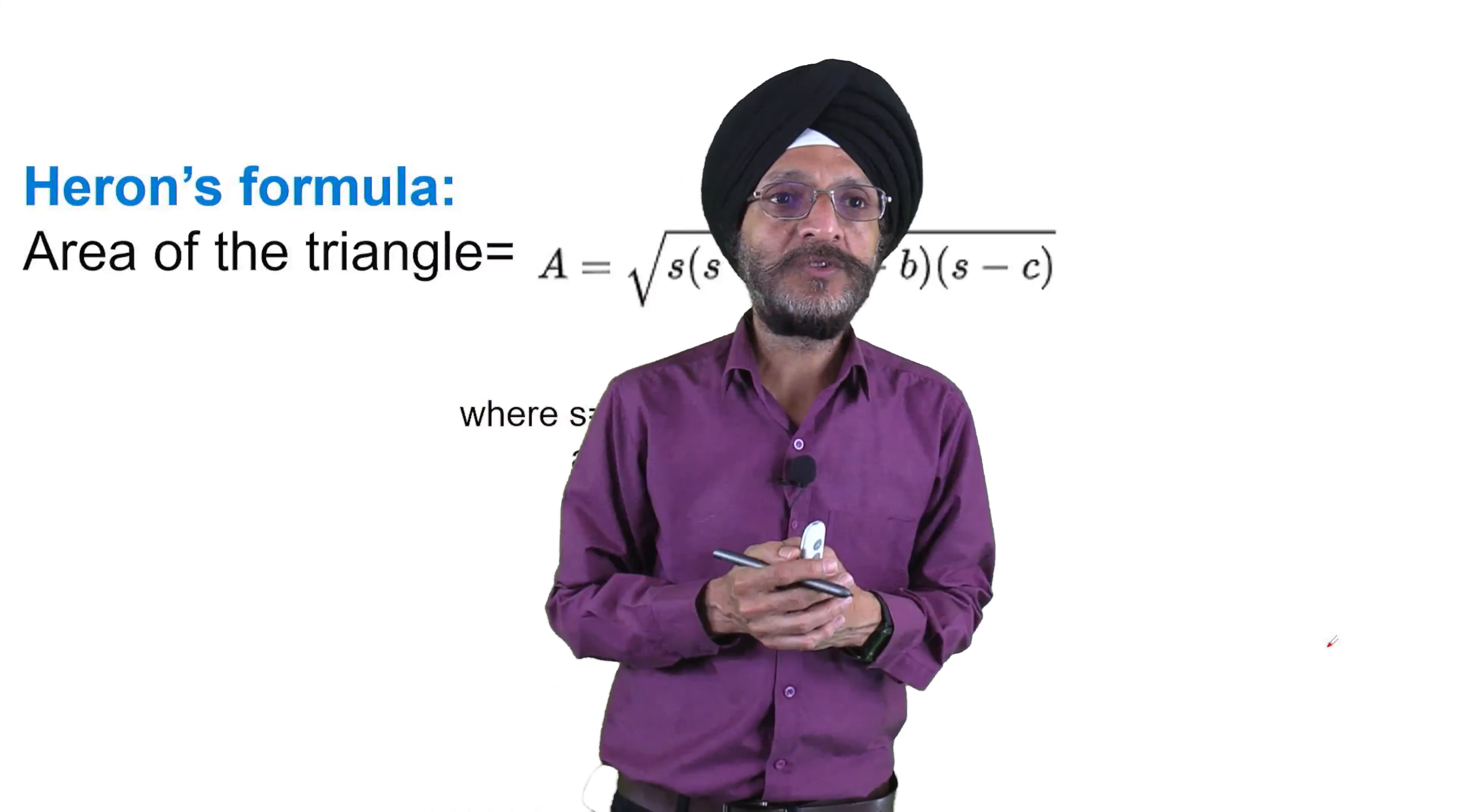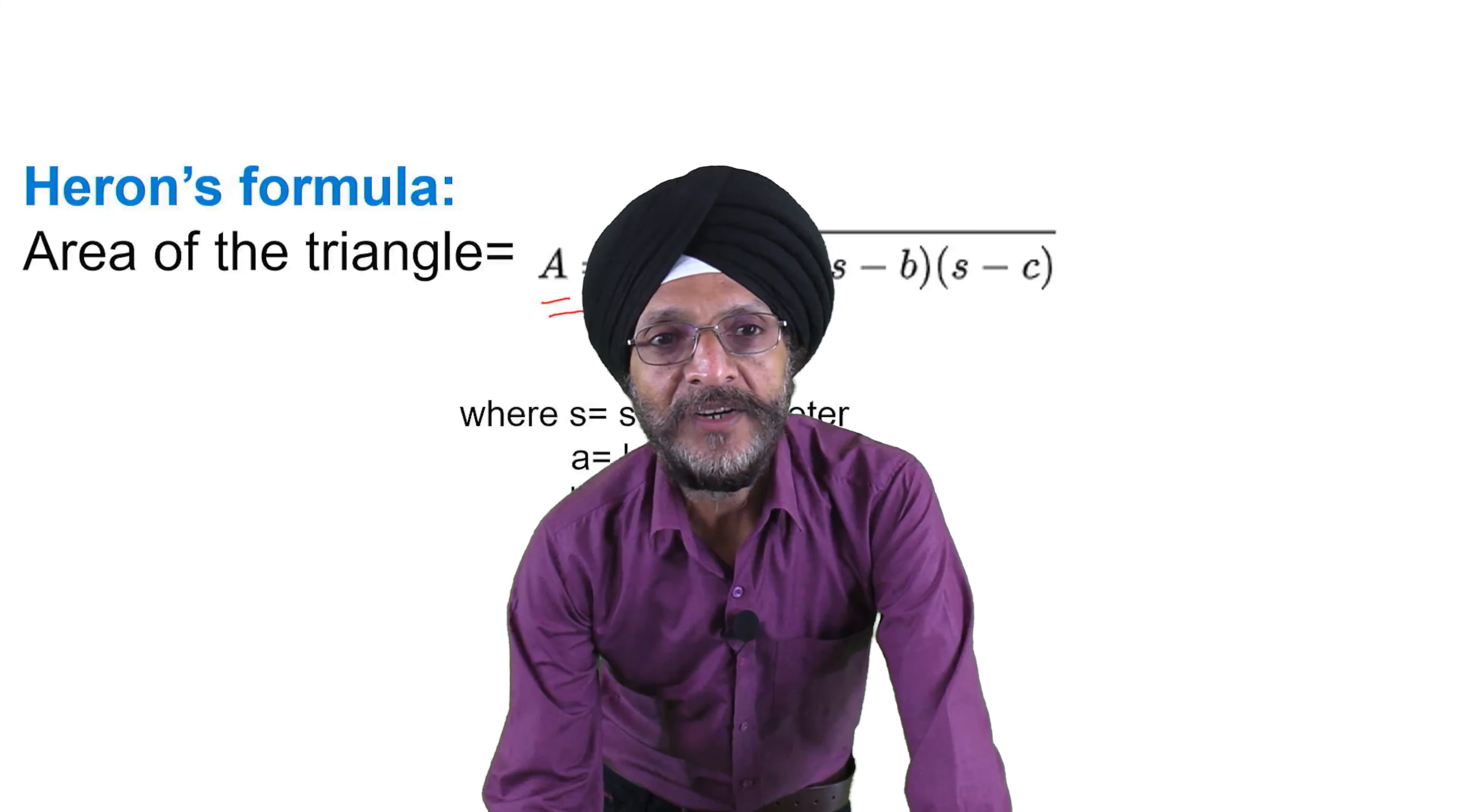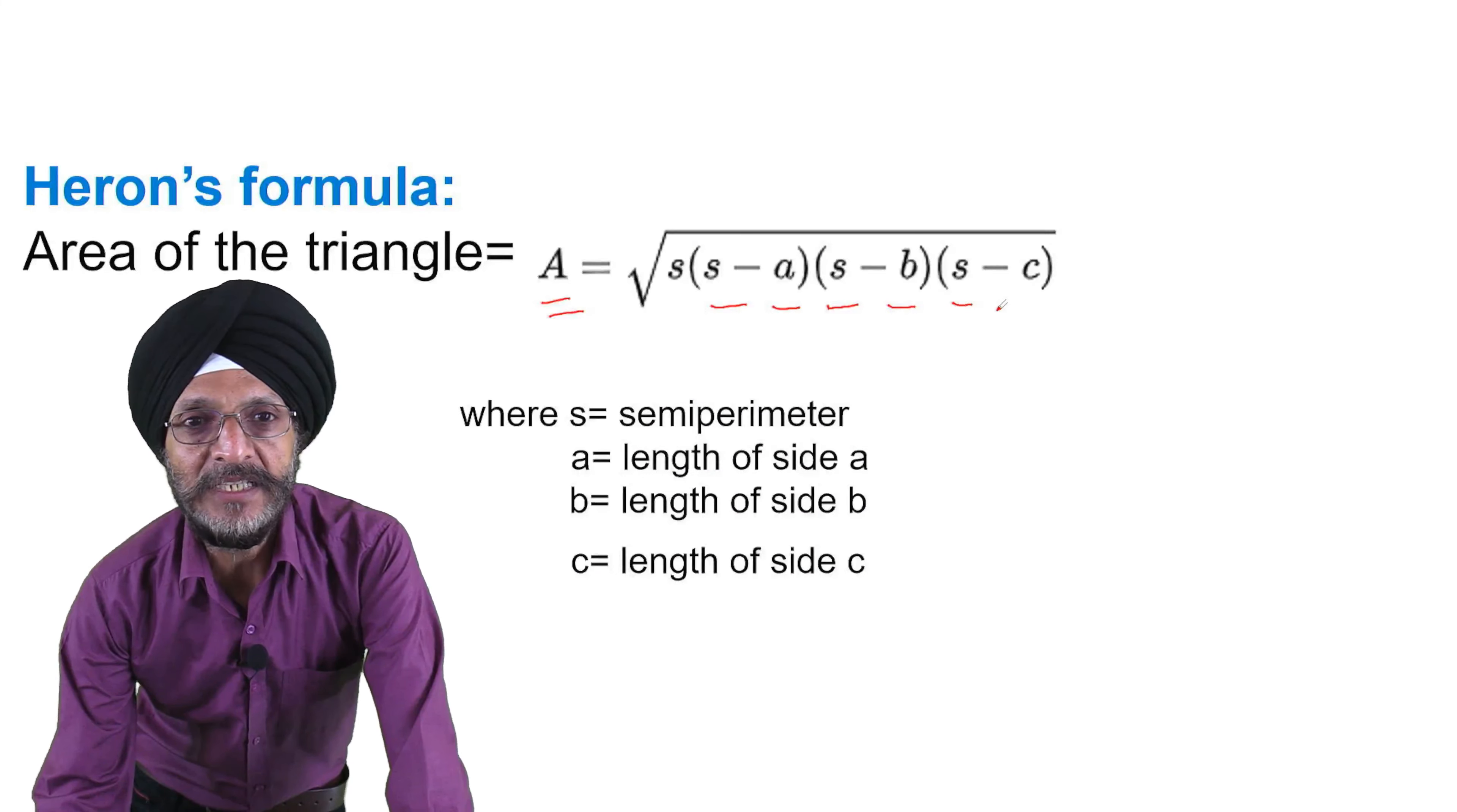Now, what is Heron's formula? This is Heron's formula: Area of triangle is equal to A equals square root of S multiplied by (S minus A) multiplied by (S minus B) multiplied by (S minus C).